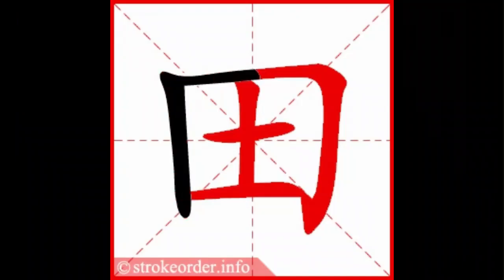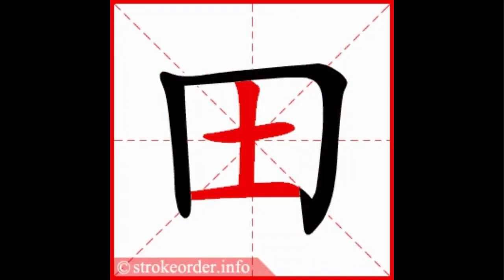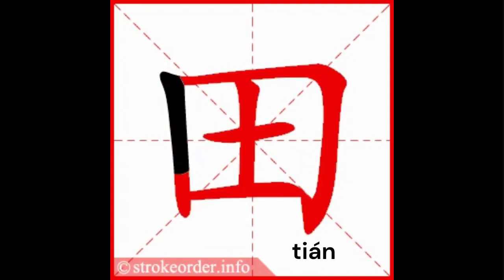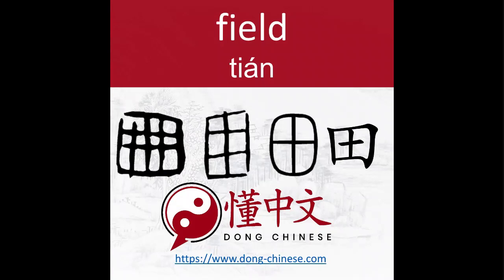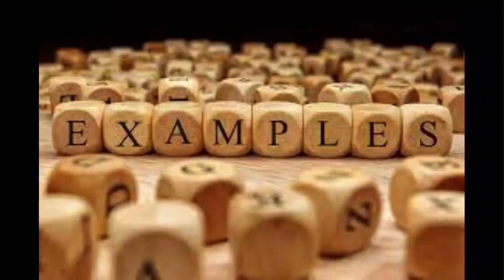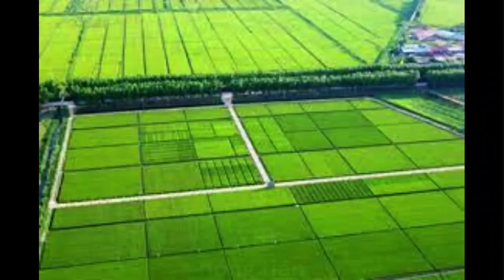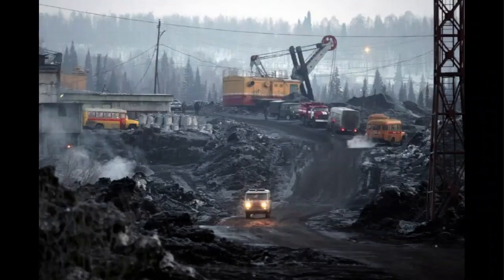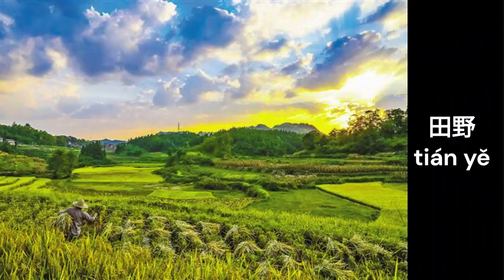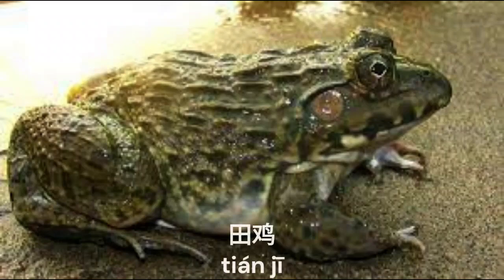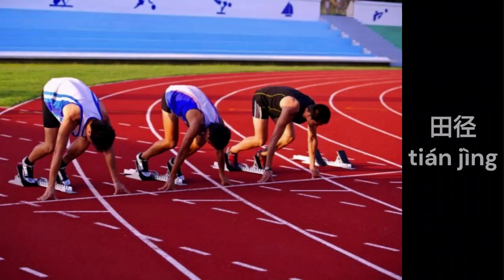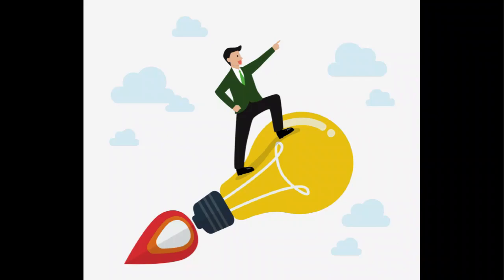In today's video, we'll teach you the Chinese character for rice paddy or field, 田. This is a fun character in the Chinese language because the character looks like a field, which makes it easy to learn. Now let's see some examples: farmland (美田), coalfield, open country (田际), frog (田井), track and field.